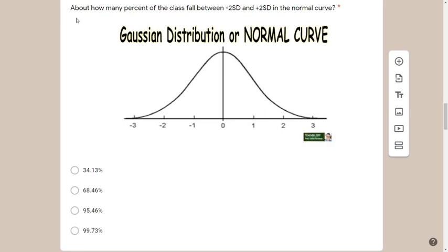Now the question: how many percent of the class fall between negative 2 standard deviations and positive 2 standard deviations in the normal curve? The options are 34.13, 68.46, 95.46, and 99.73. If you're a math major or familiar with statistics, this might be easier. For others, let me teach you how to approach this through visualization.